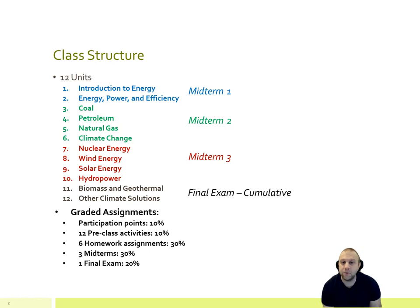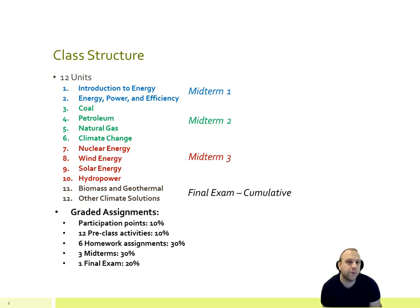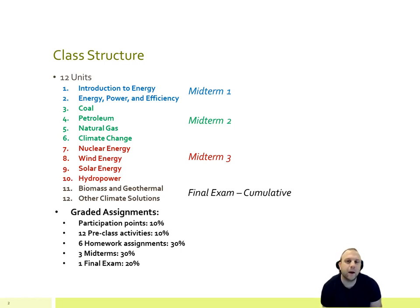You get unlimited attempts, so you should earn all 10% of the participation points available. Another 10% of your grade will be pre-class activities completed on Canvas. These give you a quick, brief introduction to the content of the next week — thought-provoking questions on topics like wind energy that you may never have considered before. There will be six homework assignments, which are a bit harder than the pre-class activities, and you usually have two weeks to complete them. Those six assignments are worth 30% of your grade, about five points each.